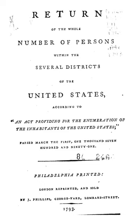Native Hawaiian and Other Pacific Islander: a person having origins in any of the original peoples of Hawaii, Guam, Samoa, or other Pacific Islands. It includes people who indicate their race as Native Hawaiian, Guamanian or Chamorro, Samoan, and Other Pacific Islander. Some Other Race: includes all other responses not included in the White, Black or African American, American Indian and Alaska Native, Asian, and Native Hawaiian and Other Pacific Islander race categories described above.